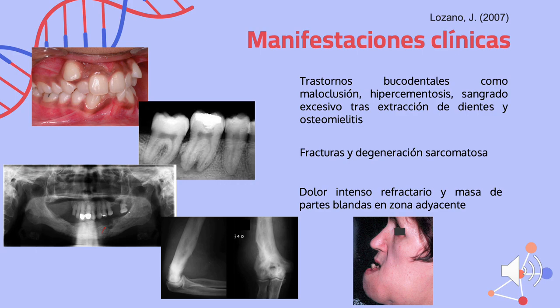También pueden presentarse trastornos bucodentales como maloclusión, es decir, un alineamiento anormal de los dientes, hipercementosis, que afecta la forma y superficie de las raíces del diente, un sangrado excesivo tras la extracción de dientes, y osteomielitis, que es la infección del hueso. También son poco frecuentes las fracturas en los huesos y la degeneración sarcomatosa, que provoca la formación de un tumor que rodea la articulación. Por último, también puede haber dolor intenso refractario, es decir, que no se puede controlar adecuadamente, y masa de partes blandas en la zona adyacente del hueso afectado.